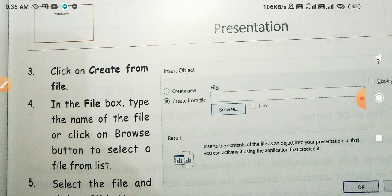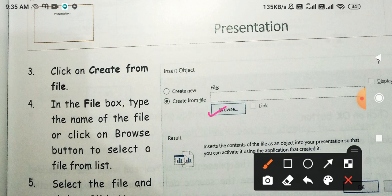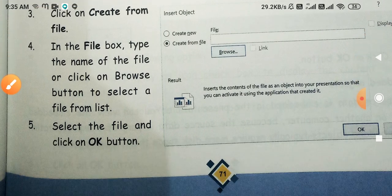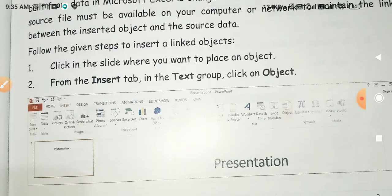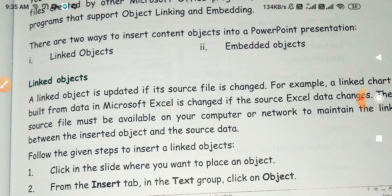In the file box, type the name of the file, or click the Browse button to select a file from the list — file का नाम याद है तो file box में type करें, नहीं तो Browse पर click करें, जहाँ सभी files show होंगी। Select the file and click OK — OK button पर click कर देंगे, और वो object आपकी presentation में add हो जाएगा।